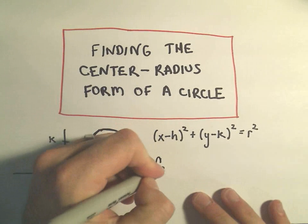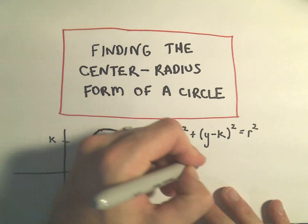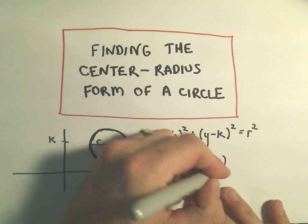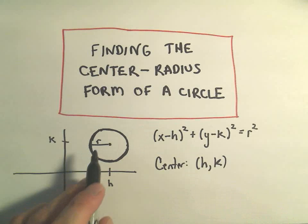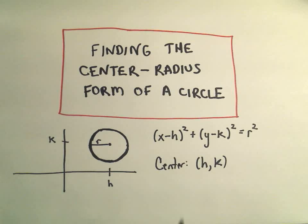So we'll say again the center is positive h, positive k. If it has a radius of r, the equation of the circle is (x-h)² + (y-k)² = r².